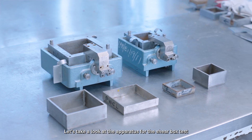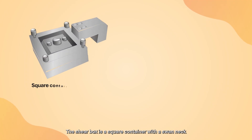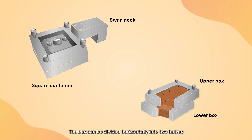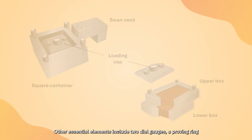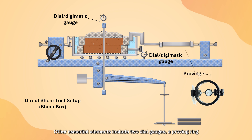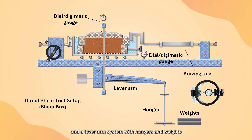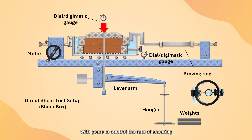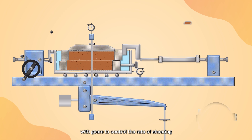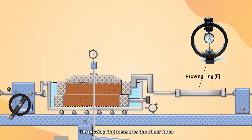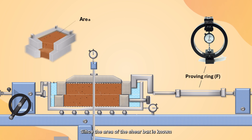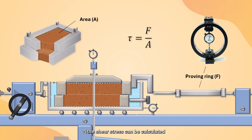Let's take a look at the apparatus for the shear box test. The shear box is a square container with a swivel neck; the box can be divided horizontally into two halves. There is a loading cap for transferring vertical load to the soil specimen. Other essential elements include two dial gauges, a proving ring and lever arm system with hangers and weights for the application of vertical stress, and a motor system with gears to control the rate of shearing. The dial gauges measure the horizontal and vertical displacements during shearing. The proving ring measures the shear force, and since the area of the shear box is known, the shear stress can be calculated.